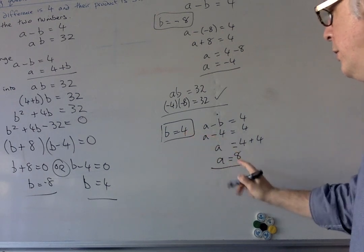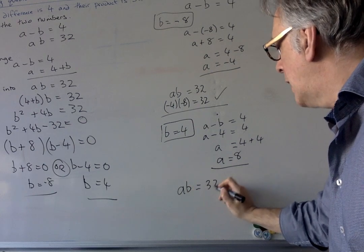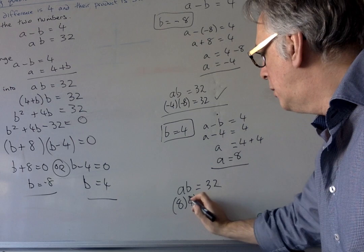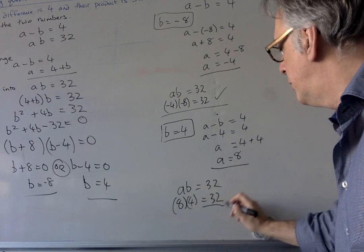Have they got a difference of 4? What happens when I times them together? Well, I've got 8 and 4, which also gives me 32. So I'm happy.